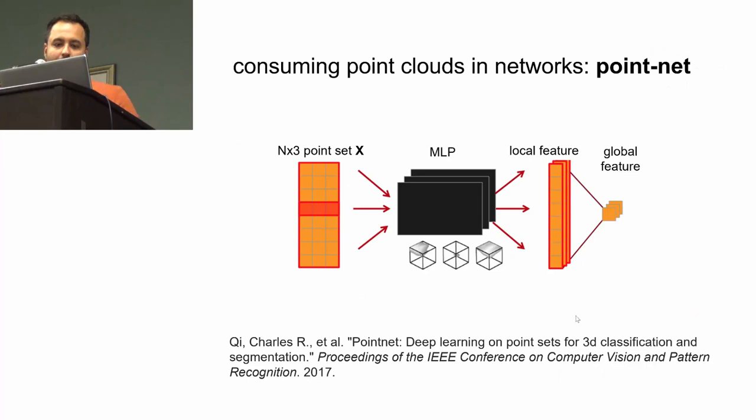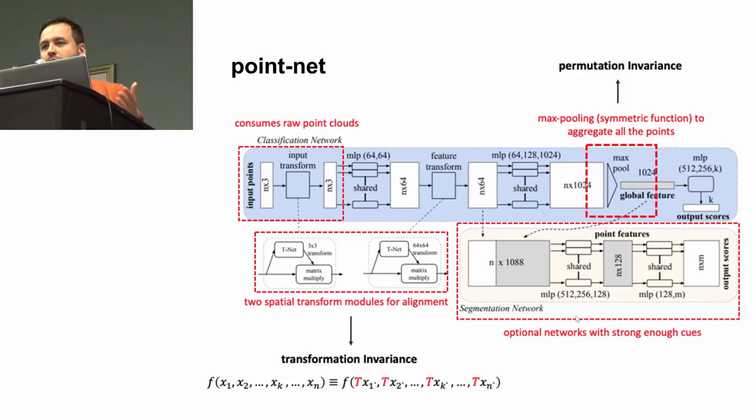There is a particular network design for this by Charles Qi called PointNet. What it does basically is it accepts an N times three point set—that is just the locations as input—to an MLP that is particularly designed in a permutation invariant way. It extracts some local features per point and then aggregates those local features with some form of pooling.